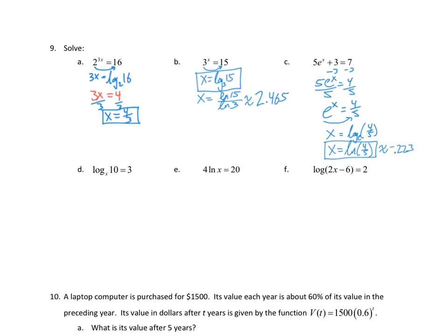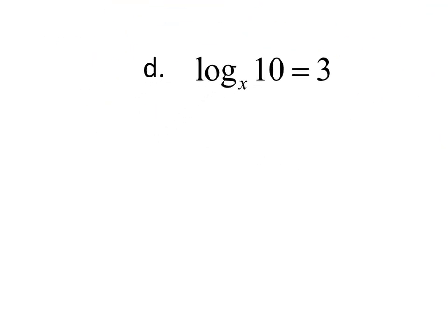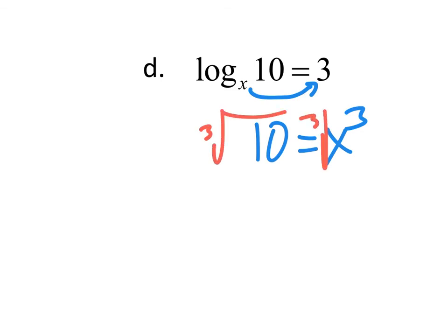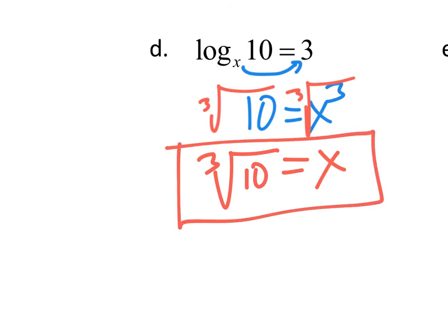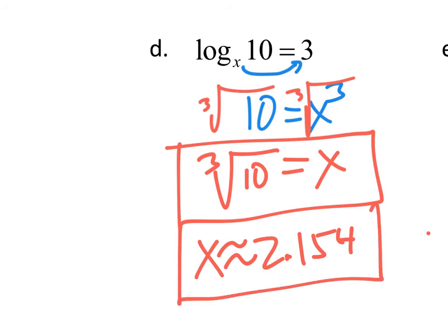For a logarithmic equation, we change it into exponential form. Swing the base around: 10 equals x to the third. The opposite of cubing is a cube root, so we take the cube root and get x equals the cube root of 10. That is the exact answer, and using a calculator gives approximately 2.154.